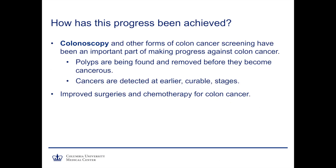How has this progress been achieved? Colonoscopy and other forms of colon cancer screening have been a really important part of this progress. Through colonoscopy, polyps are found and removed before they become cancerous, so cancer is actually being prevented. Additionally, when cancers are diagnosed, they're being detected at earlier and more curable stages. In addition, over the past 40 years, improved surgical techniques and improved chemotherapy have also increased the likelihood of surviving and beating this disease.